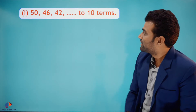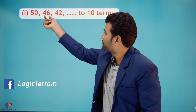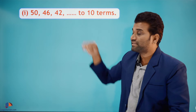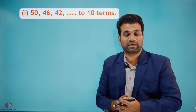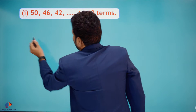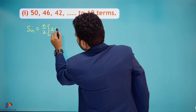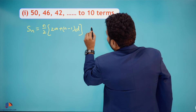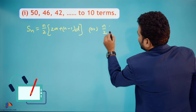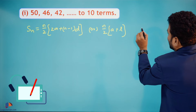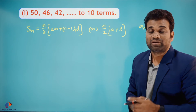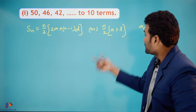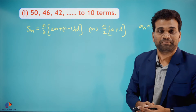The first arithmetic progression is 50, 46, 42, and so on, to 10 terms — so we need to find the sum of the first 10 terms. The sum of n terms formula is: Sn = n/2 × (2a + (n−1)d). Alternatively, you can use Sn = n/2 × (a + l), where l is the last term (i.e., the nth term). The second form is derived from the first when the last term is known.